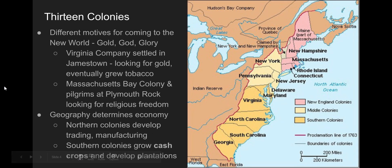Now, who settles here and why? There are different motives for coming to the new world. They are often referred to as the three G's: gold, God, and glory. Specifically, if you look at this map, we typically talk about the colonies as being three different regions: New England in the north, the middle colonies, and the southern colonies.